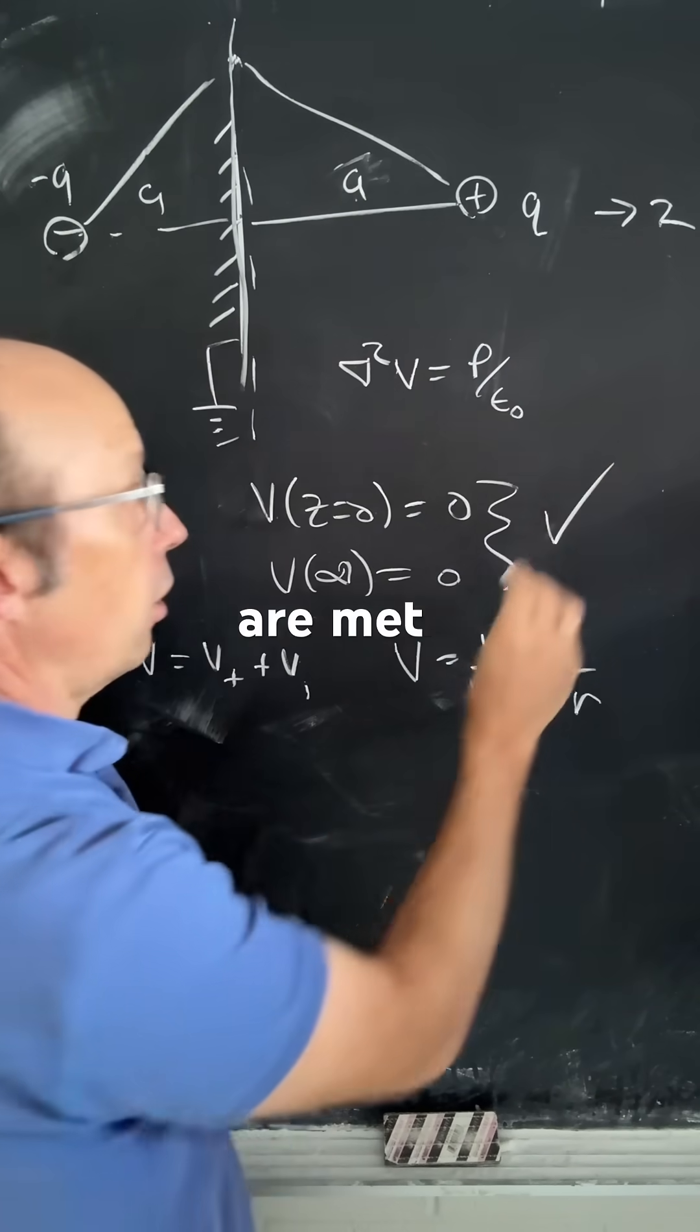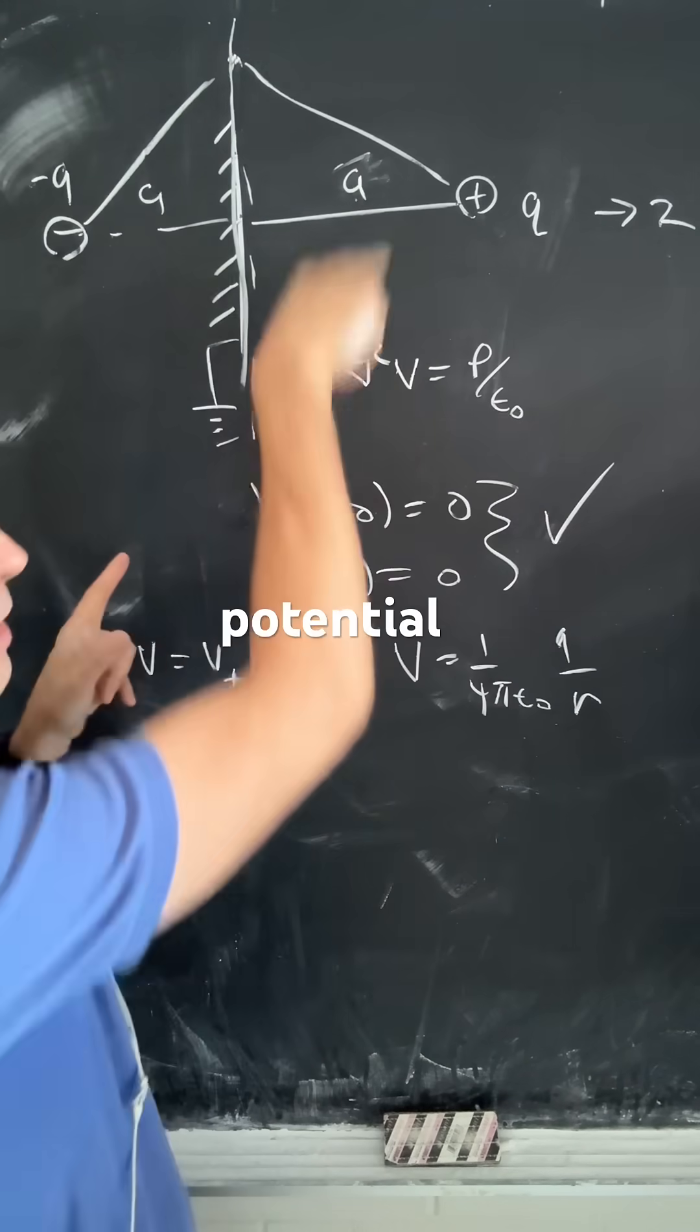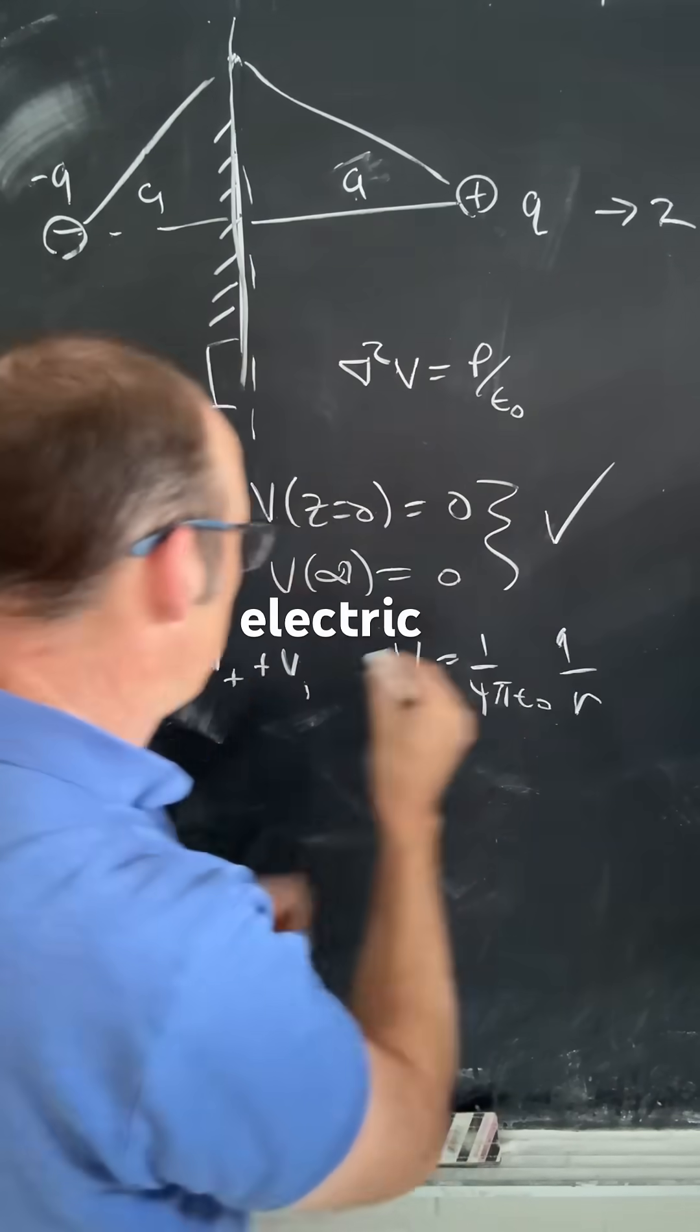So these two boundary conditions are met, and now I can find the potential anywhere, and then I can find the electric field anywhere.